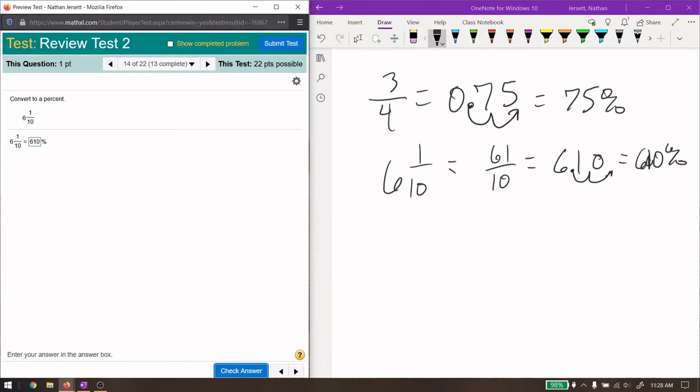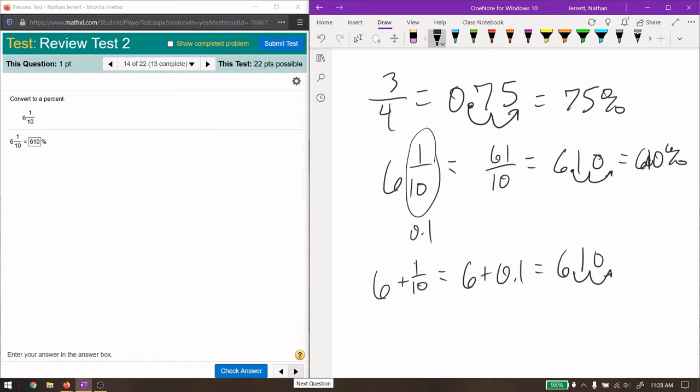You can also directly know if you know that 1/10 is 0.1, then 6 and 1/10 is the same thing as 6 plus 0.1, which is 6.1, and then you do the same process to get 610%. Either way you'll get the same answer.